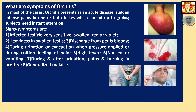What are the symptoms of Orchitis? In most of the cases, Orchitis presents as an acute disease — sudden intense pain in one or both testes, which spreads up to the groins. Orchitis may be two types: chronic and acute. But chronic cases are comparatively rarer; most cases are acute. Signs and symptoms are: number one, affected testicle very sensitive, swollen, red, violet — violet means too much inflammation. Heaviness in the swollen testis. Discharge from penis, bloody, during urination. Feeling of pain when pressure applied or during coitus. High fever, nausea, vomiting. During and after urination, pains and burning in urethra. Generalized malaise.